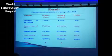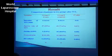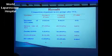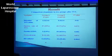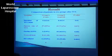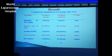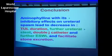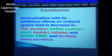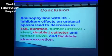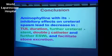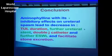Double J catheter showed a meaningful p-value: Group A 10%, Group B 55%. Other complications — there were no complications — which supports our hypothesis that no systemic absorption of aminophylline from the urethra occurred in this study. We believe this study has defects, but it is one of the few research studies performed using a local agent to decrease ureteral spasm and increase success rate of TUL. Aminophylline with its inhibitory effect on ureteral spasm leads to decrease in TUL duration, further ureteral stenting, double J catheter use, further need for ESWL, and facilitates stone excretion.